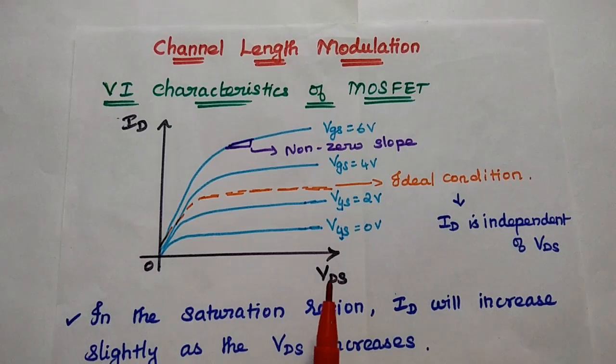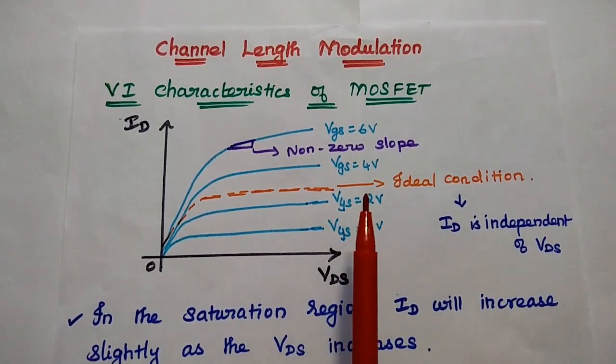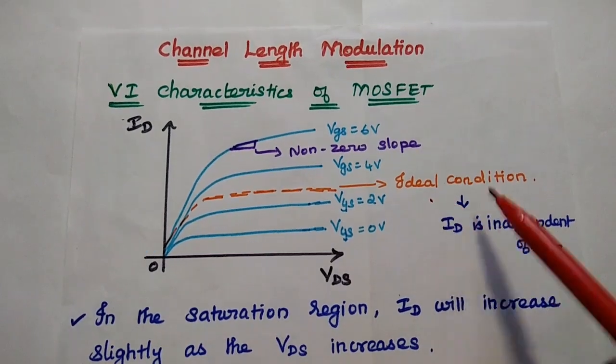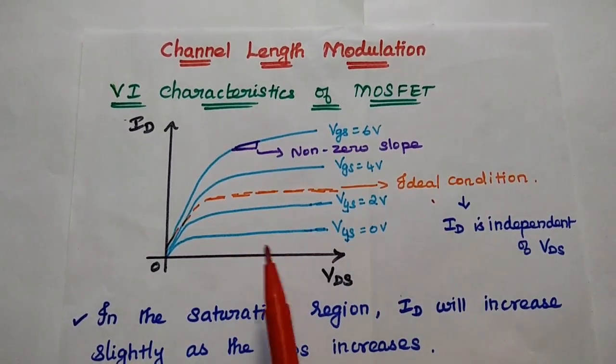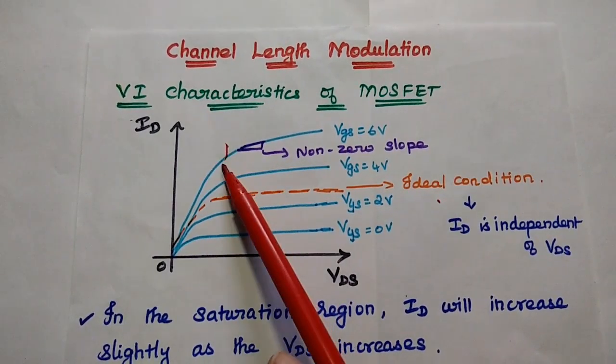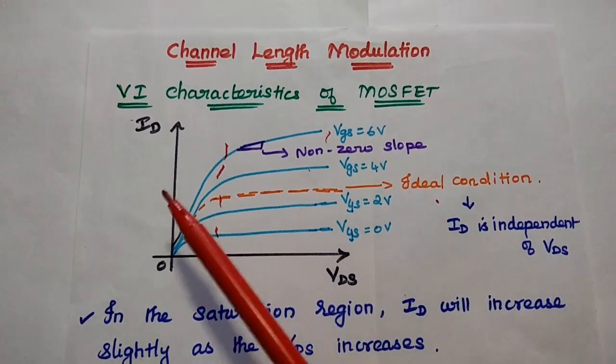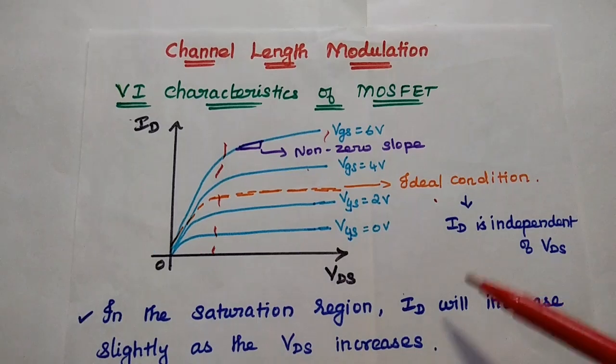Output current versus output voltage with VGS as constant. In the ideal condition, the drain current is independent of VGS. We can consider the saturation region. In this region, ID becomes independent of VDS.